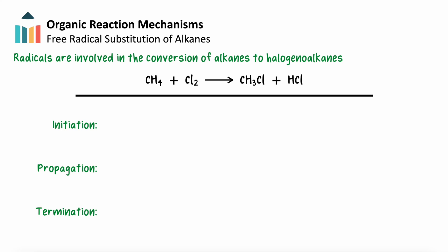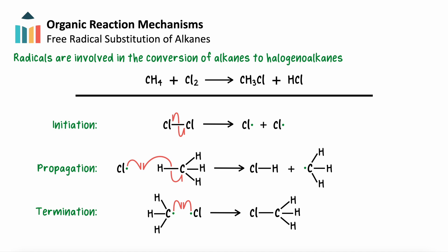In the initiation step, we have the homolytic fission of chlorine to form chlorine radicals. These radicals create our chain reaction, propagated by the reaction with methane to create a methyl radical. This process is terminated when the methyl radical joins with chlorine to produce chloromethane.